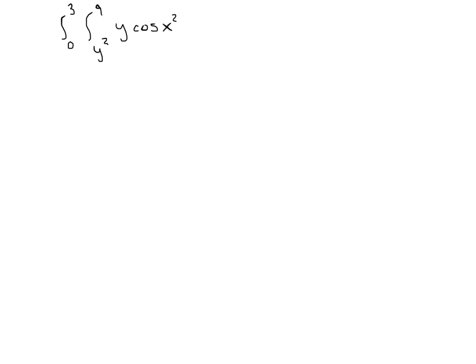Let's do another example. Take the integral from 0 to 3, then from y² to 9, of cos(y)·cos(x²) dx dy. If you try to evaluate this, the inside integrates with respect to x, and we'd need to integrate cos(x²) — and that's not integrable without a computer system. So there are times when we need to reverse the order of integration: instead of x first then y, we do y first then x, so we can actually evaluate the integral.